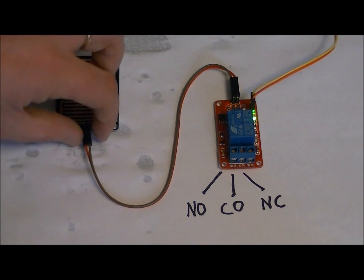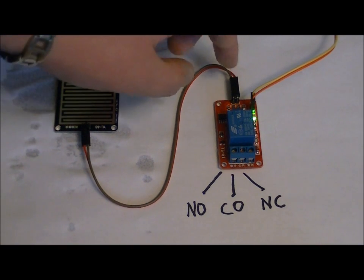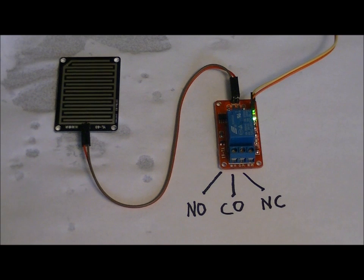It doesn't matter which pins are connected between the ring detector module and the relay board because it's interchangeable. It's merely just a switch.